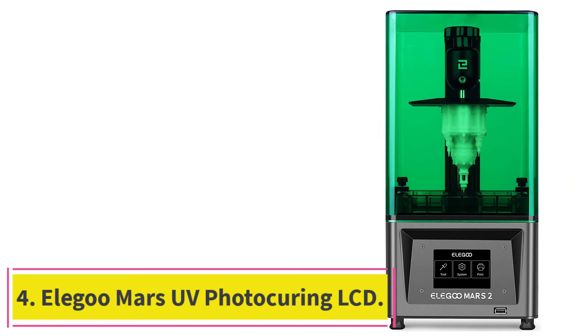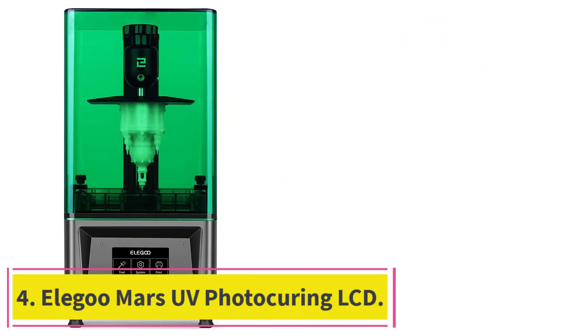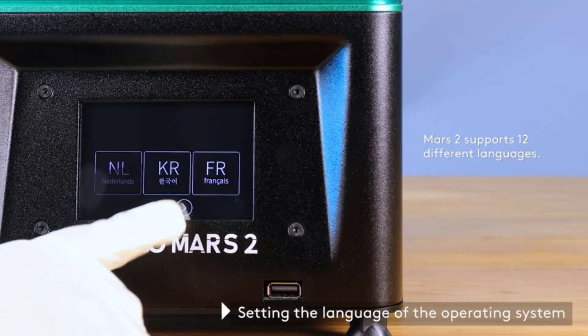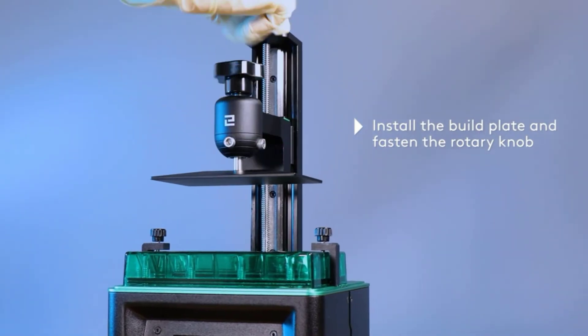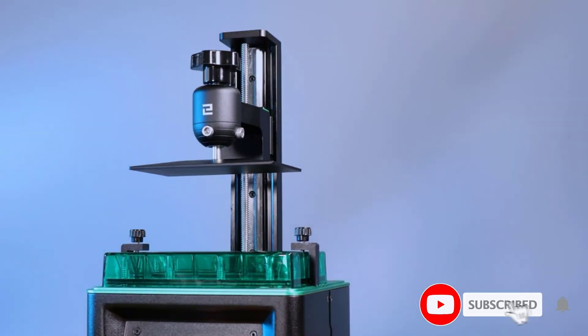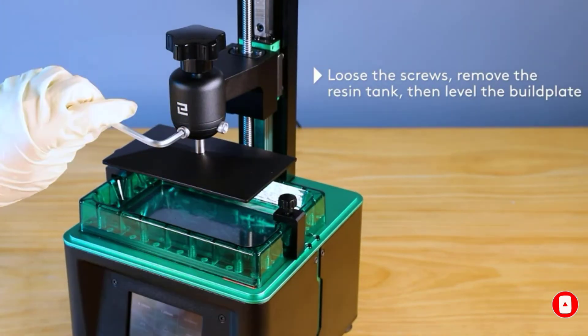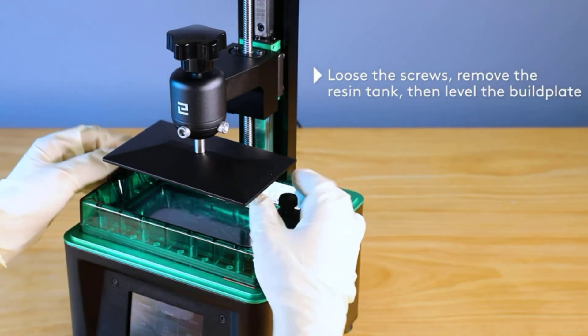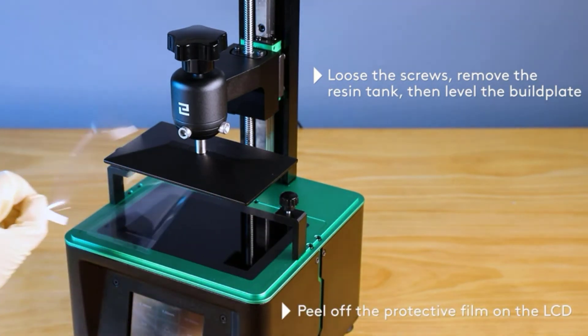At number 4, Elegoo Mars UV Photo Curing LCD. This is a high-resolution printer with a full metal body. It consists of aluminum, which adds to its strength. It provides superiority and performance, just like a professional machine. Furthermore, its price is very reasonable compared to its features and quality. Therefore, it is a superb choice for both beginners and enthusiasts.